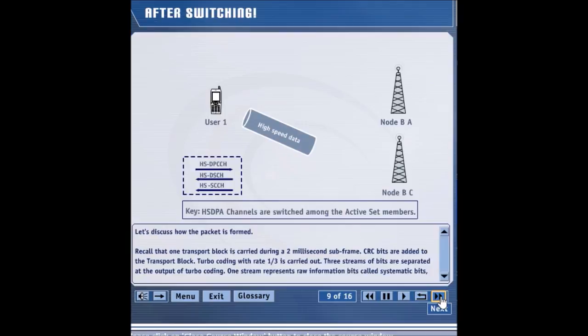After a handover occurs, the UE starts the HSDPA operation with node B C. Now it is observing the HSDSCH and HSSCCH from node B C and node B C is observing the HSDPCCH from the UE. Note that node B C must be part of the active set.